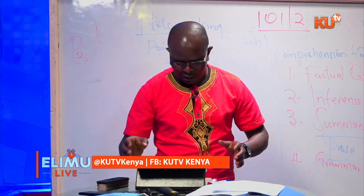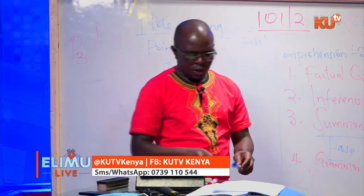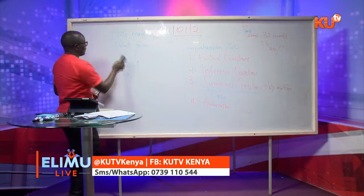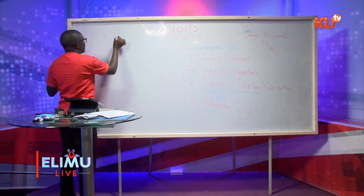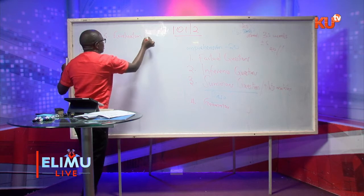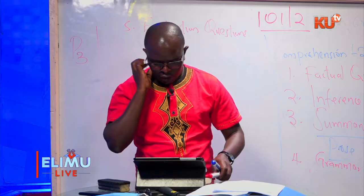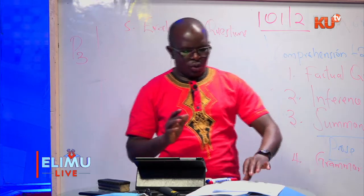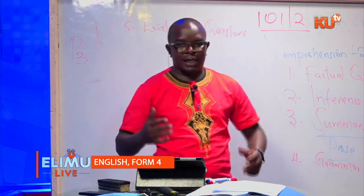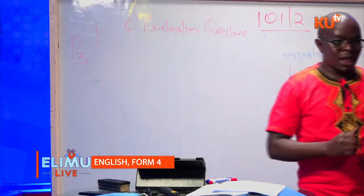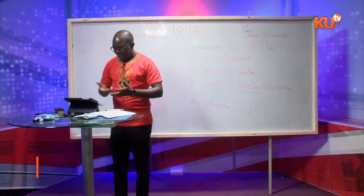Take note that comprehension also tests you on aspects of grammar. The next thing we want to focus on here is evaluation questions — that is the fifth type of question. These are questions that require the student to give answers based on their own judgment. Such a question will begin with maybe 'what do you think?' or 'describe the attitude of the writer.' In that kind of question, you're supposed to simply evaluate and come up with the attitude.